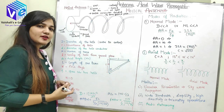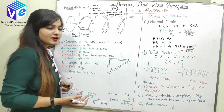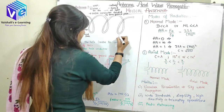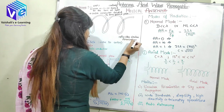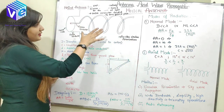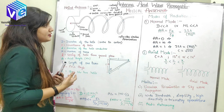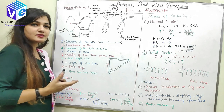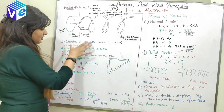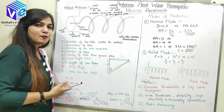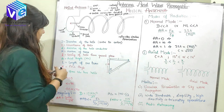It gives circular polarization. It is a complex structure and we need to know various things to design this kind of antenna. These are the various parameters depending upon which I can design different kinds of helical antenna.